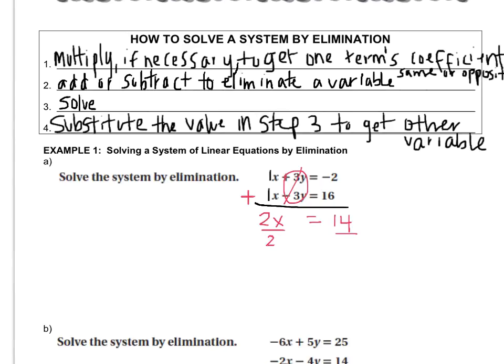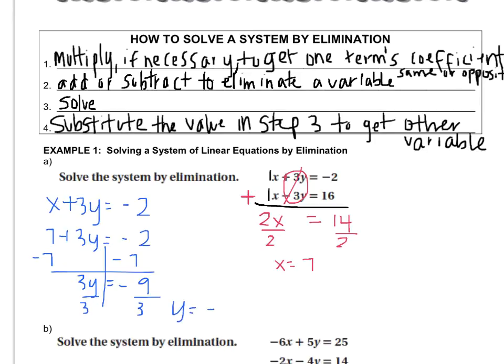So step three is to solve, which means that x equals seven. Now go back to one of the original equations. I'll just pick the first one and see what you get for y. So that's seven plus three y equals negative two. Let's solve: three y equals negative nine, so y equals negative three. So that means the point that solves my system is the point seven, negative three.